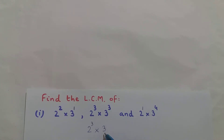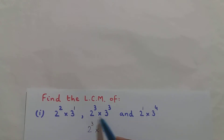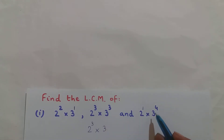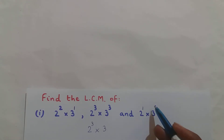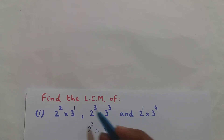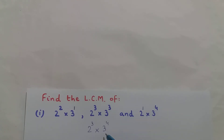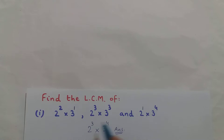Now what is the exponent of base 3? In the expressions I have 3¹, 3³, and 3⁴. You pick the greater exponent — 4 is greater than 3 and 1 — so the exponent of base 3 is 4. And this is your answer: the LCM of question number 1 is 2³ × 3⁴.